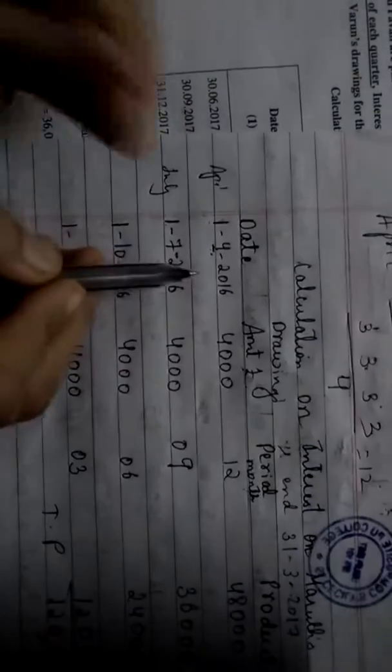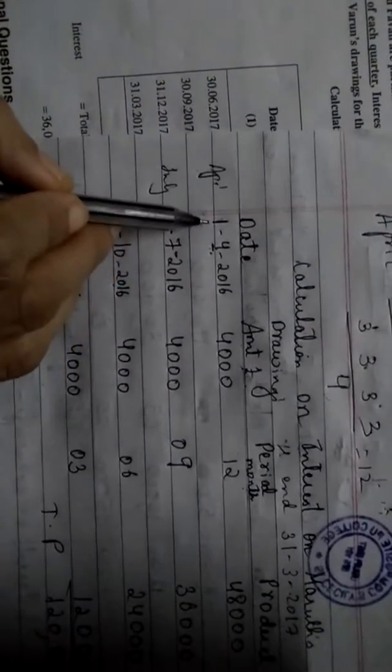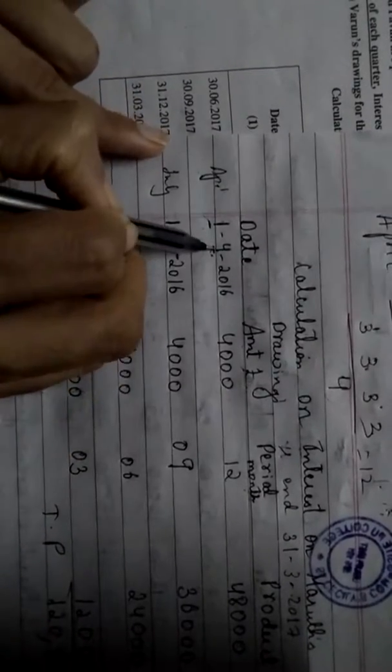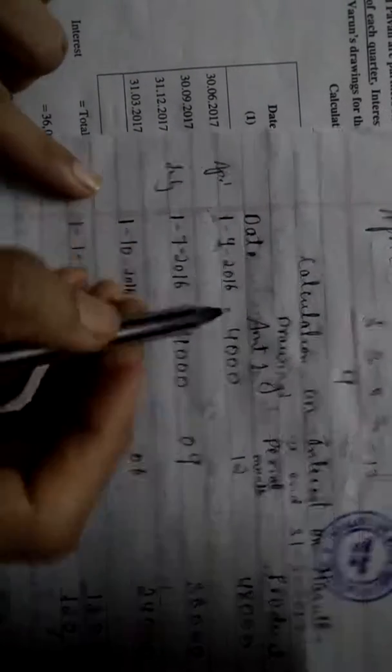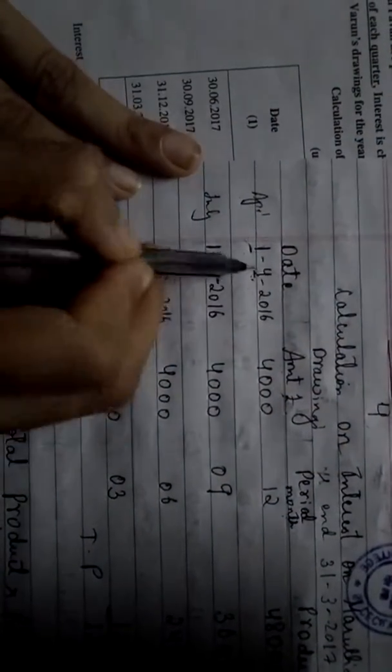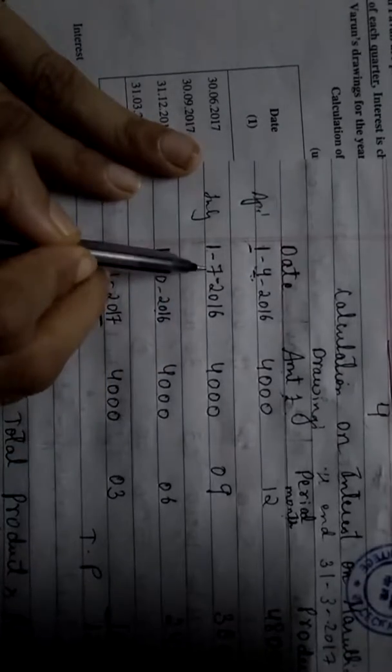So first he will withdraw always on the first financial year, which is always 1/4/2016. Why I wrote 1? Because they have told beginning. Why I wrote 4? Because April - April always is the first date in financial year. So 4 then 7. I told after 3 months. So 4, 5, 6, three months. 6 then 7. So 7. Yes. After April it is July.